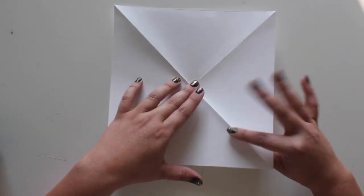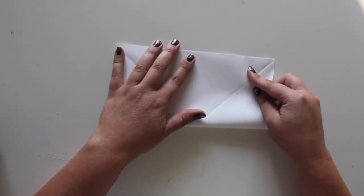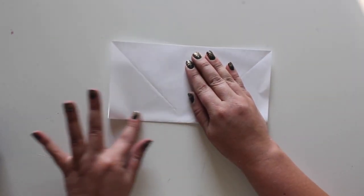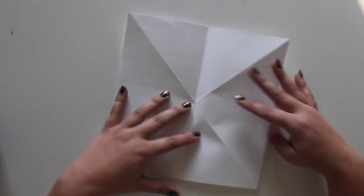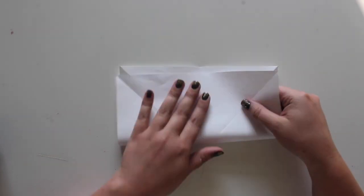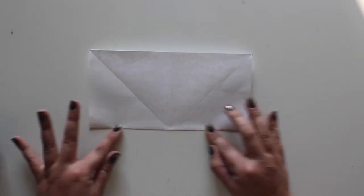Turn the paper over. Fold the bottom edge up to the top. Open, turn 90 degrees, then fold the bottom to the top again. Now when you unfold the paper, you should have folds that look like an asterisk.